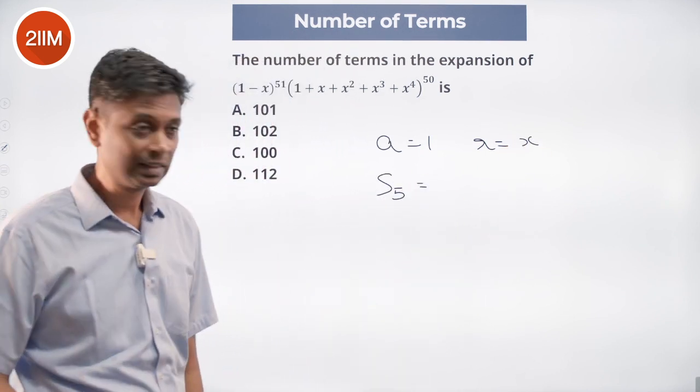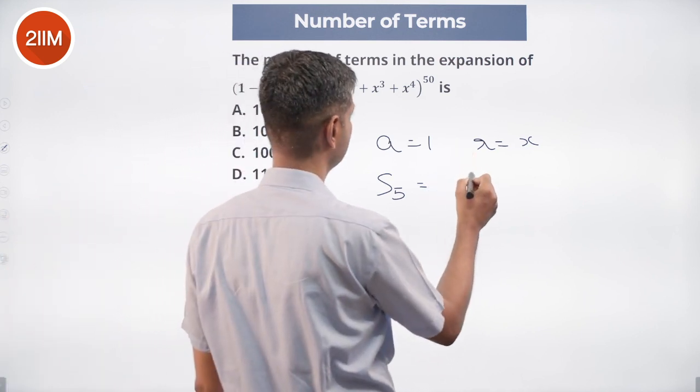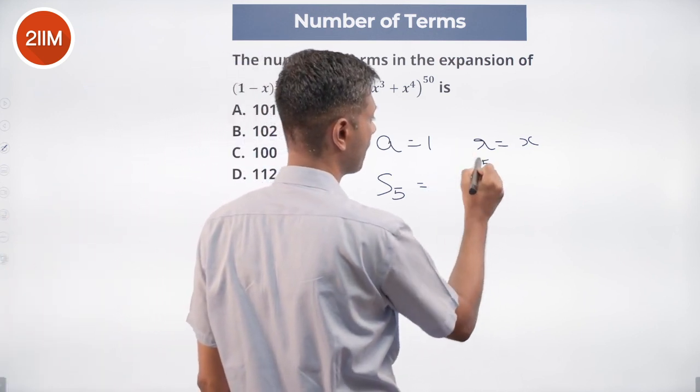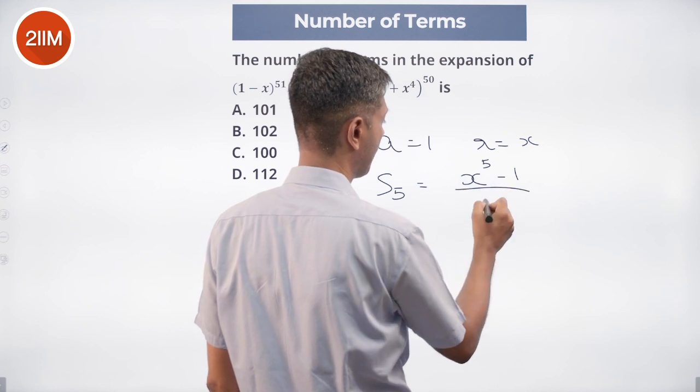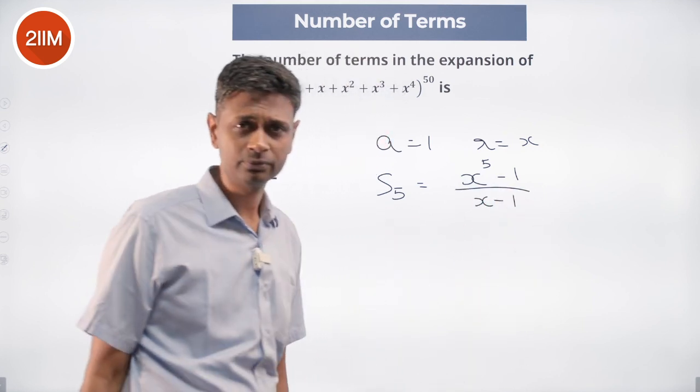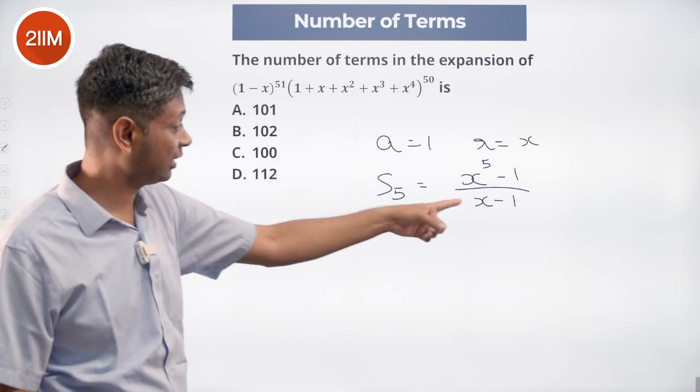You think about it like that, means this a r power 5 minus 1 by r minus 1. This can be rewritten like this,